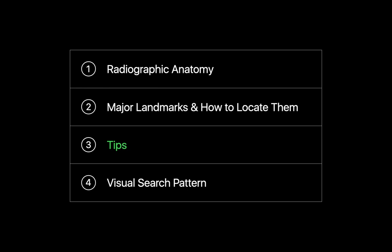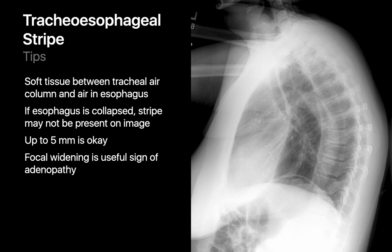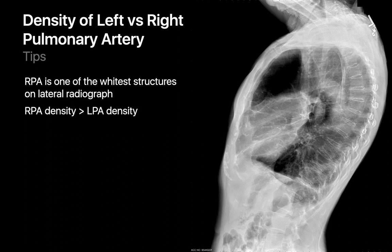Be careful identifying the trachea on a lateral chest radiograph, as the relatively lucent region between the scapular blades can resemble a tracheal air column. Check for corrugations or a nearby dark vertical rectangle to confirm. In patients with a dilated air-filled esophageal lumen, check the thickness of the tracheoesophageal soft tissue stripe — if it's over five millimeters or focally widened, consider chest CT. Because of the right pulmonary artery's longer length, it should appear as one of the densest structures on the lateral; always verify it looks slightly denser than the left pulmonary artery.